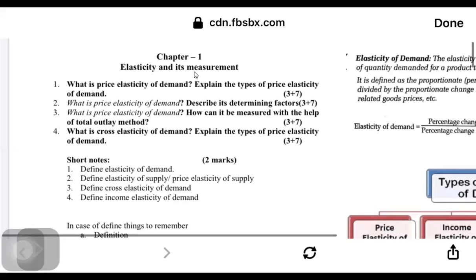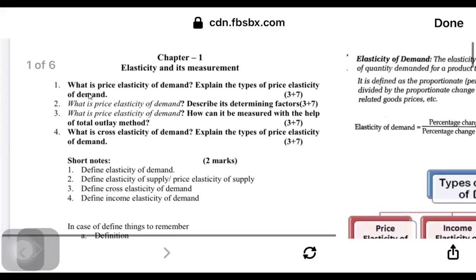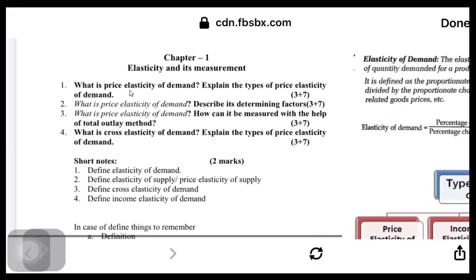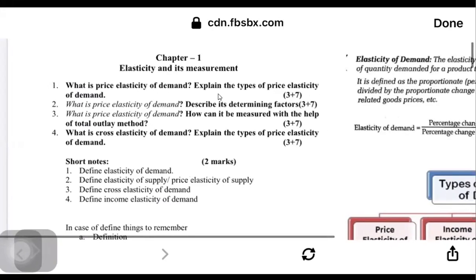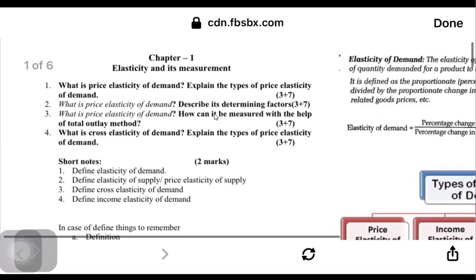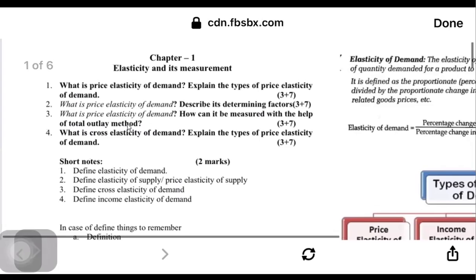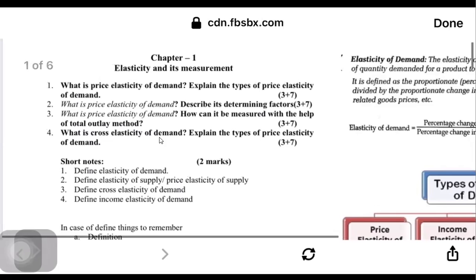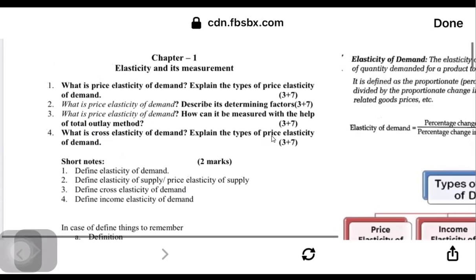Hello everyone. We are going to discuss Chapter One: Philosophy of Measurement. In Chapter One, there are altogether four portions which are really important. The main important topic is elasticity of demand. Along with it, two or three questions are linked: explain the types of price elasticity of demand, describe the measuring factor using the total output method, and what is cross elasticity of demand. Altogether there are three important questions in this topic.